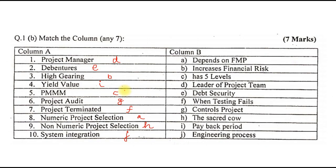The next question in the April 2019 paper was match the column. Project manager is the leader of the project team. Debenture is the debt security. High gearing increases the financial risk. Yield value relates to payback period. PMMM is option C, which has five levels. Project audit is G, which controls the project. Project terminated is F, when testing has failed. Numeric project selection is A, depends on FMP. Non-numeric project selection is H, the sacred curve. And system integration is J, an engineering process. These were the objectives from the April 2019 paper.